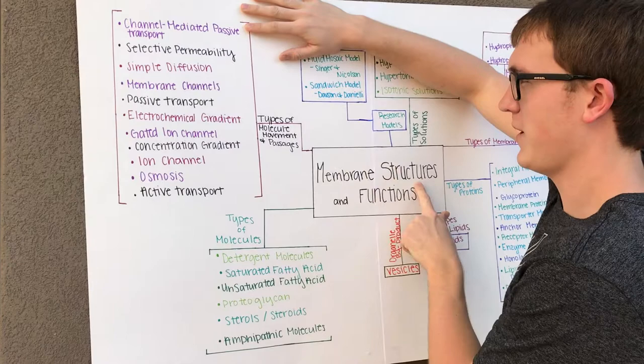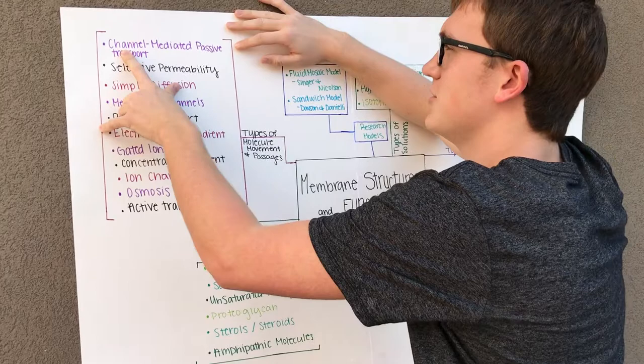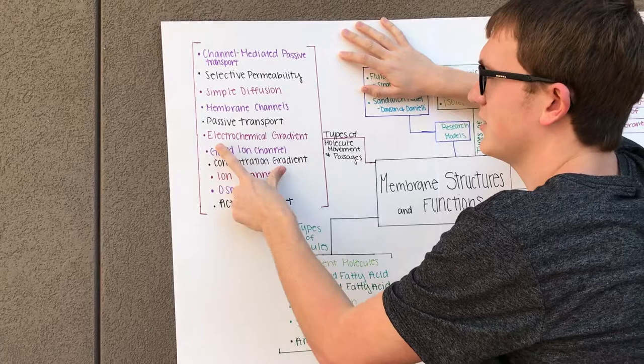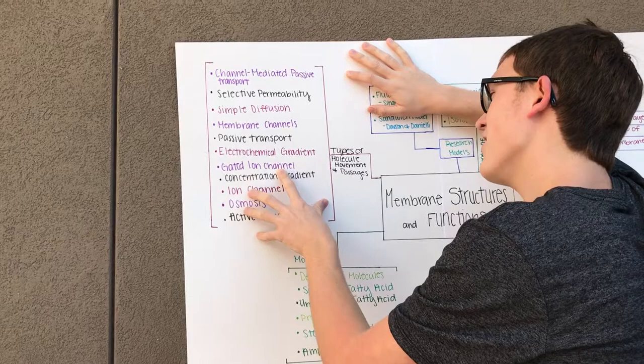And then also branching from your main point you have your types of molecule movements and the passageways. So you'll have your channel mediated passive transport, your selective permeability, your simple diffusion, your membrane channels, your passive transport, electrochemical gradient, gated ion channels,